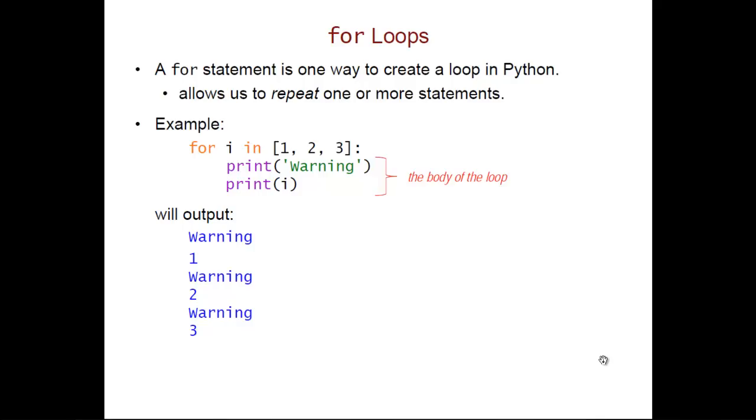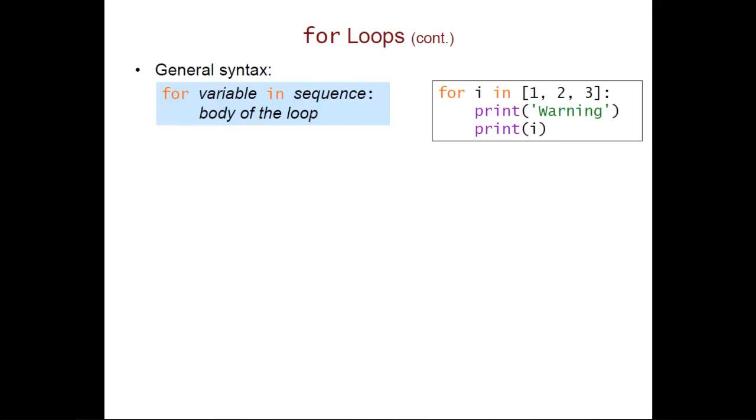Now how do we figure that out, how many times we're going to repeat? Well here's the general syntax for a for loop. After the keyword for we're going to have some variable, which is the loop variable, we then have the keyword in, we then have some type of sequence. So in our example our sequence was a list but it could also be a string or some other type of sequence. Then we have a colon, and then we have the body of the loop which as we said has to be indented underneath the loop header.